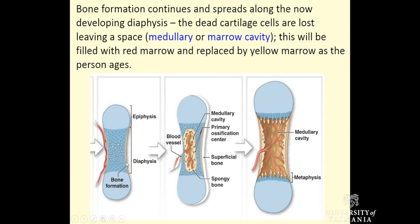Here we've got our bony collar forming in our diaphysis, our cartilage matrix degenerates, we've got our blood vessel bringing in this periosteal bud, and we get bone formation in our primary ossification centre. We can see the diaphysis, the medullary cavity forming, we've got our compact bone and a little bit of spongy bone in this region. Bone formation continues and spreads along the now developing diaphysis, the dead cartilage cells are lost, leaving a space which is going to form the medullary or marrow cavity. This gets filled with red marrow, and over time that red marrow gets replaced by yellow marrow with age, such that red marrow becomes isolated to the epiphyseal regions, the heads of the bones.